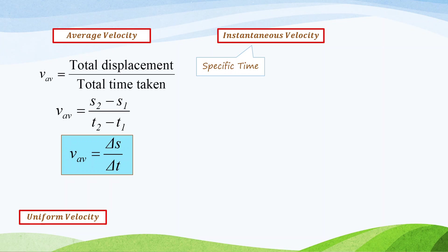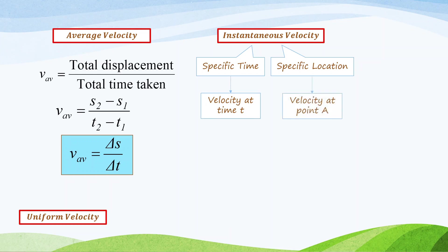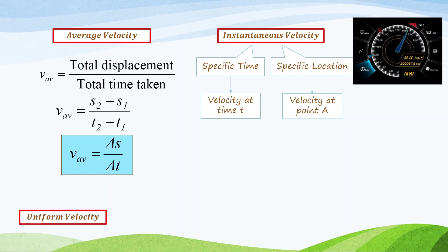Instantaneous velocity is the velocity that occurred at a specific time or velocity at a specific location. So, we can say velocity at certain time T, or velocity at certain location point A. For example, like when you're driving the car, you see the speedometer on the dashboard — the speedometer reading shows the instantaneous velocity, or instantaneous speed, the velocity at a certain point of time. The formula of instantaneous velocity is ds over dt.